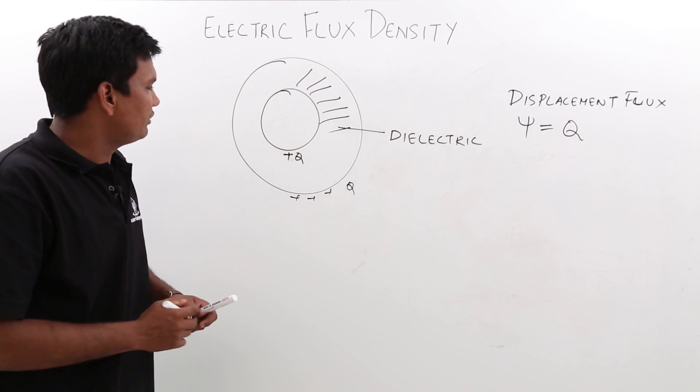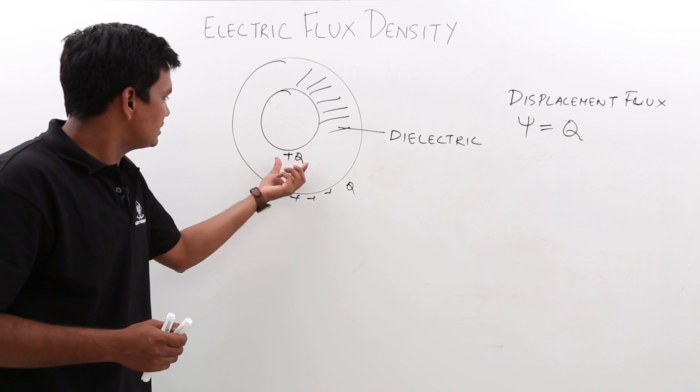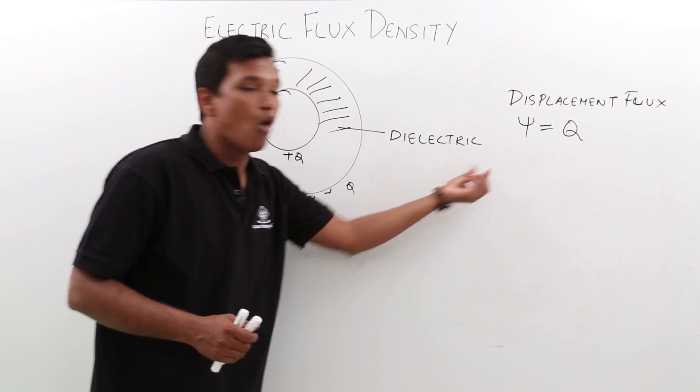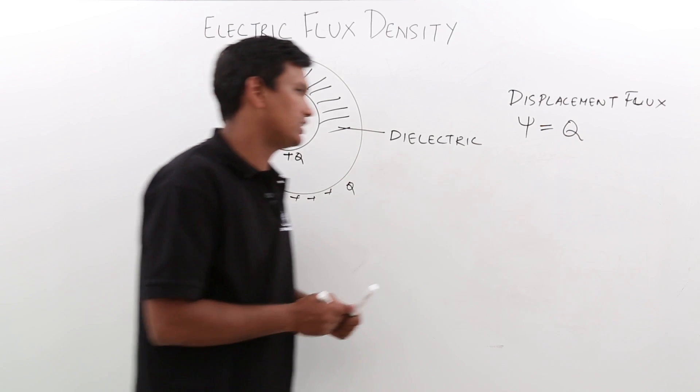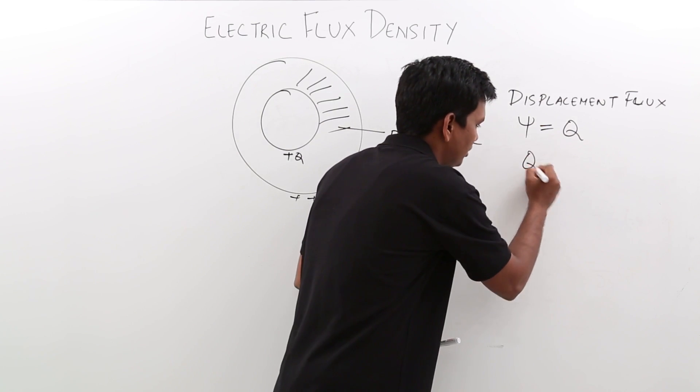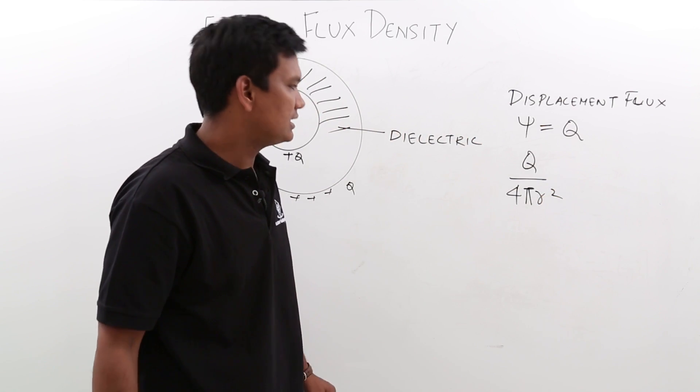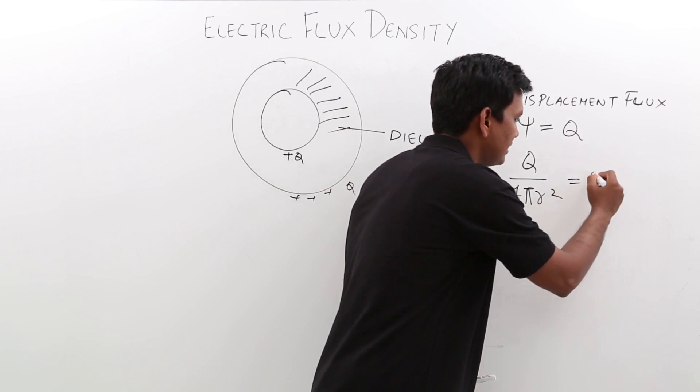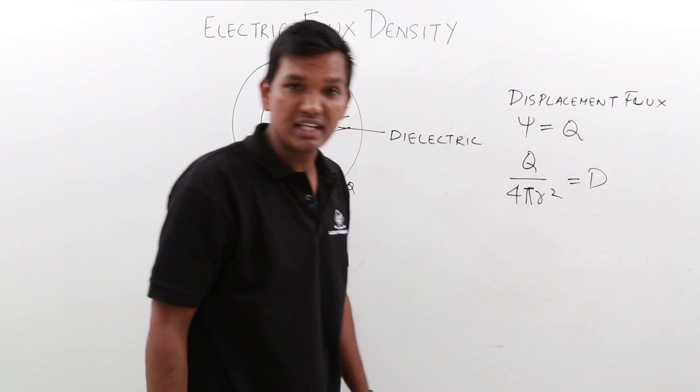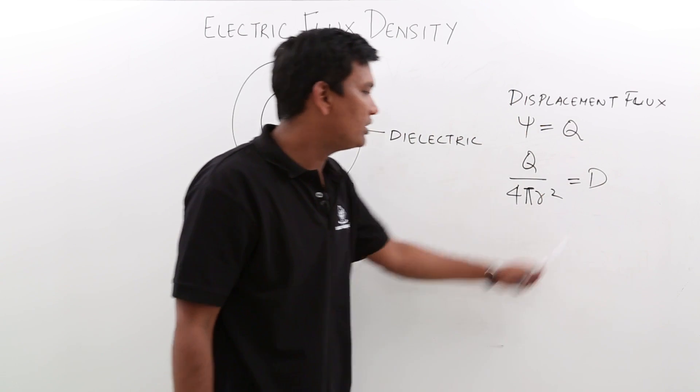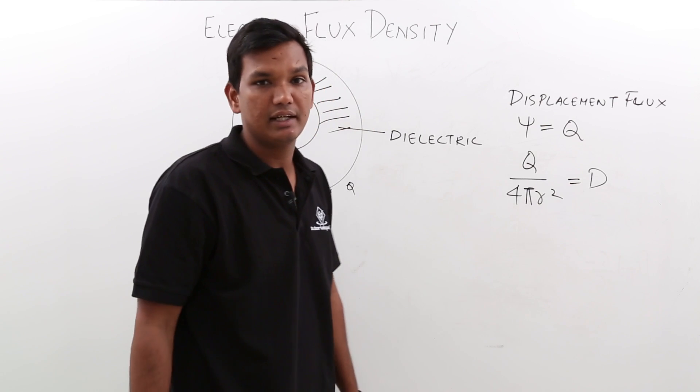Now, if I calculate the displacement flux over the surface area, which is q by 4πr², which is the surface area for a sphere, this has been named as displacement flux density and it is popularly known as electric flux density.